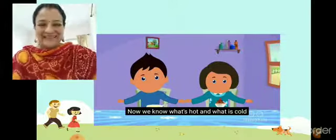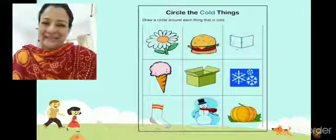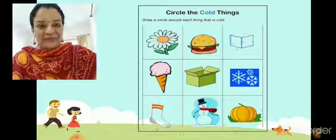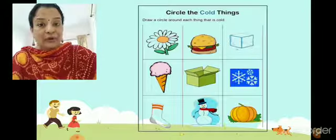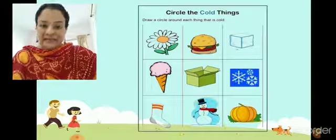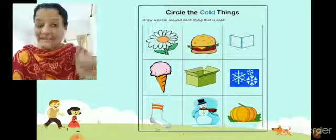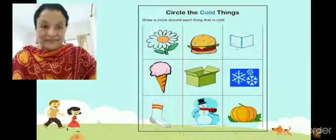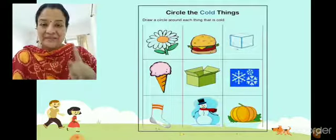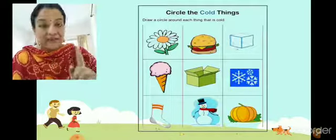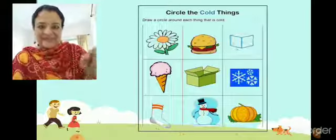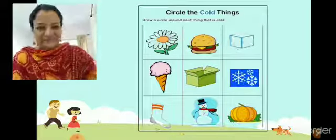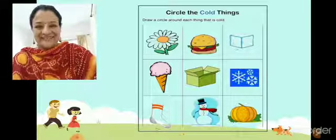Okay children, now activity for you. What do you have to do? Circle the cold things. This activity you are going to do, children. Find out which things are cold and you are going to circle them. That is very nice, children — you are going to circle them.